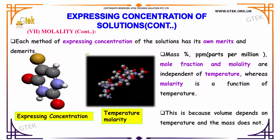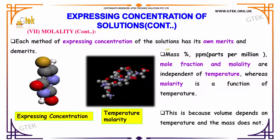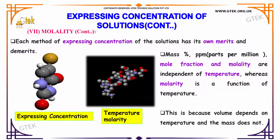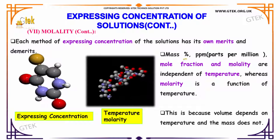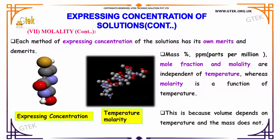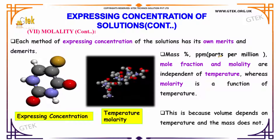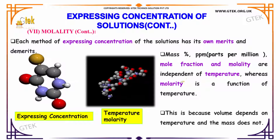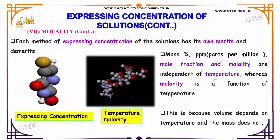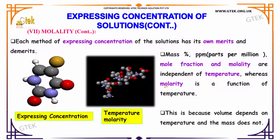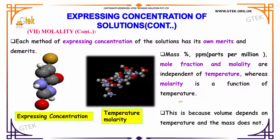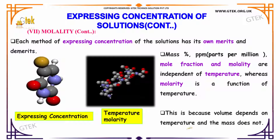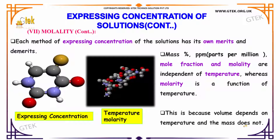Each method of expressing the concentration of a solution has its own merits and demerits. Mass percentage, parts per million (ppm), mole fraction, and molality are independent of temperature. Whereas molarity is a function of temperature. This is because volume depends on temperature while mass does not.